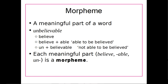For example, we have the word 'unbelievable.' We can break this into a few different parts. We have 'believe,' we have '-able' that we can attach to believe, and we have 'un-' that we can attach to the front. We have the root word, and then '-able' tells us that the root word is able to be believed, and then 'un-' tells us not able to be believed. So each of these parts — believe, -able, and un- — is a morpheme, because each part tells us something about what the word means.